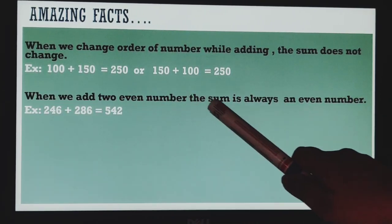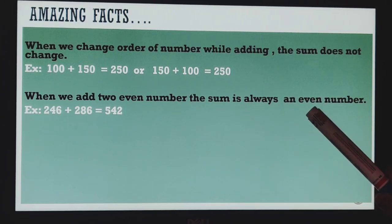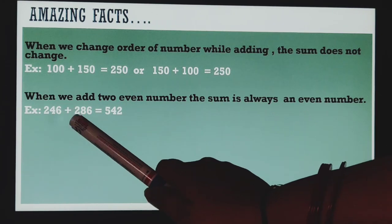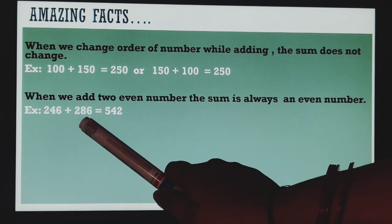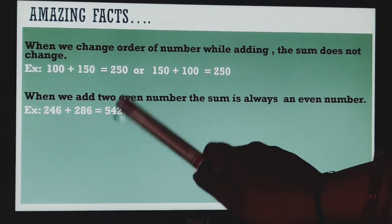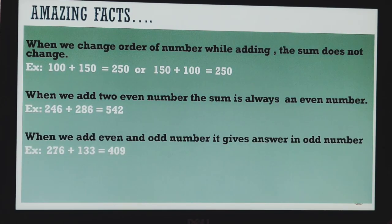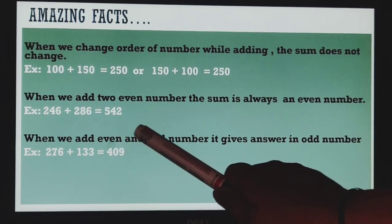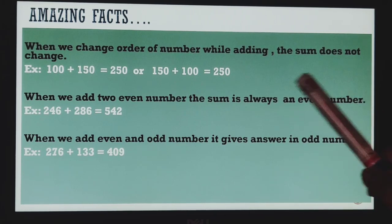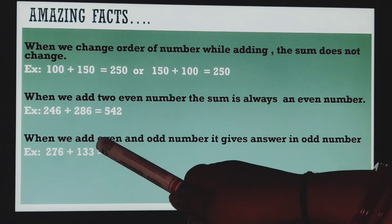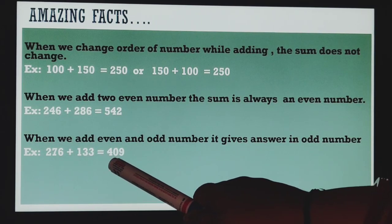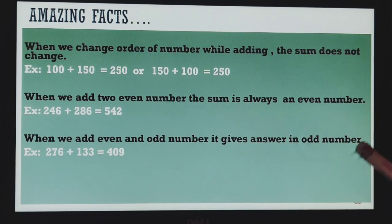Next, when we add two even numbers, the sum is always an even number. Like, 246 is an even digit plus 286 is also an even digit. What answer will we get? 542. This number is also an even number. When we add even and odd number, it gives answer in odd number. Like 272 is an even number and 133 is an odd number. What answer will we get? 409, which is an odd number.